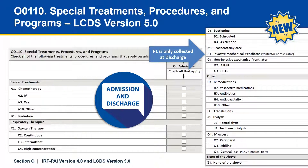For the LCDS, this is the same comprehensive list we saw for the IRF-PAI. These same elements will be collected in Column A at admission and Column C at discharge. The one exception is F1, Invasive Mechanical Ventilator. You can see the blue arrow pointing to F1 in this screenshot. This element is collected only at discharge in the LCDS.